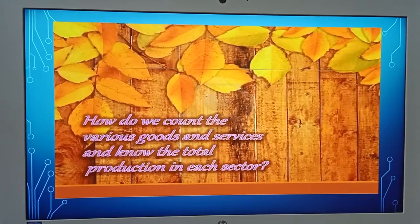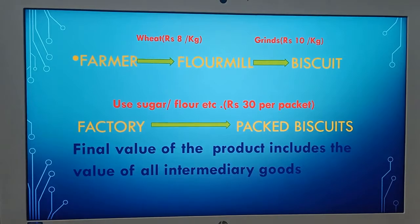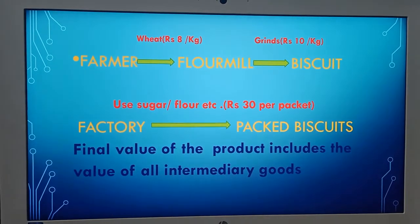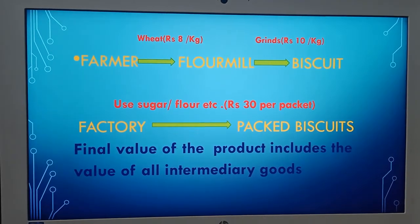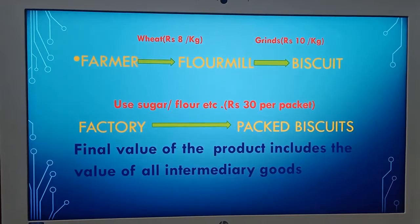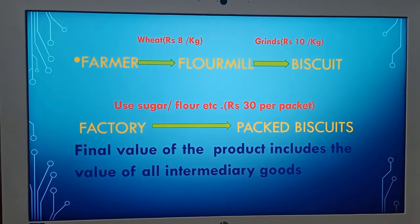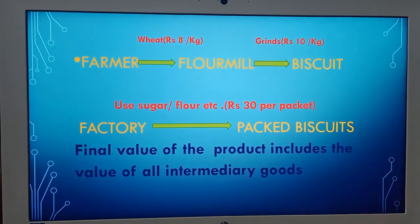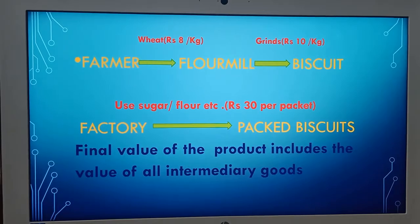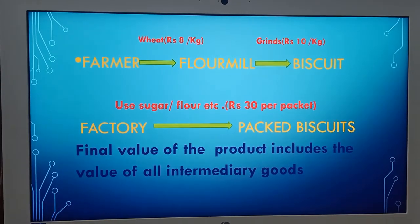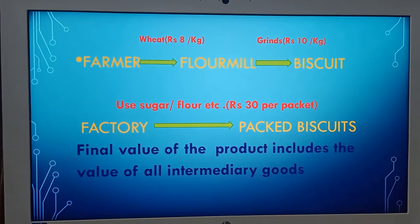Let's take an example. The farmer supplies wheat to the flour mill at the rate of Rs. 8 per kg. The flour mill grinds the wheat and provides it to the biscuit factory at the rate of Rs. 10 per kg.